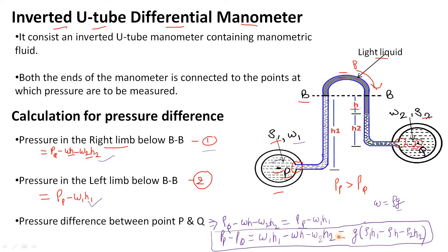We use the inverted U-tube manometer where accuracy and low pressure measurement are required. This is all for the inverted U-tube differential manometer. In our next video, we will talk about other U-tube differential manometers. If you don't understand anything, comment in the comment box and I'll make a separate video. Thank you for watching. Have a nice day.